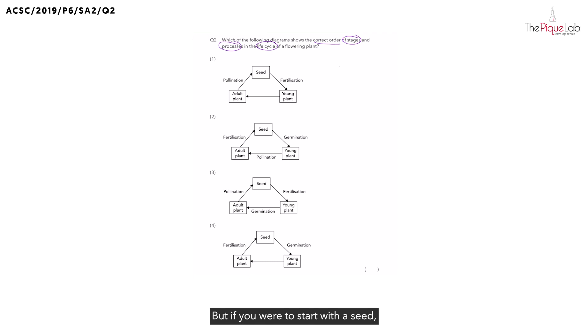But if we were to start with the seed, what process must happen to the seed for it to develop to become a young plant? This process starts with the letter G. That process is called germination. And the seed will germinate to form the seedling or the young plant.